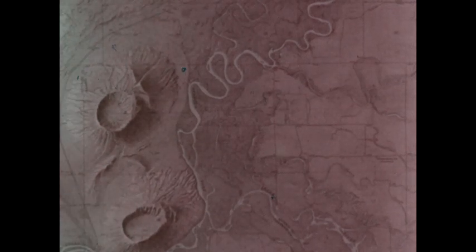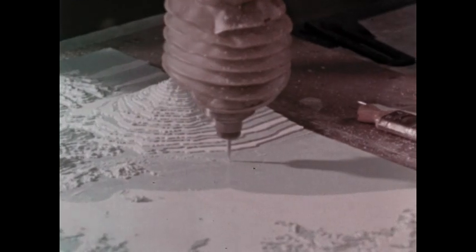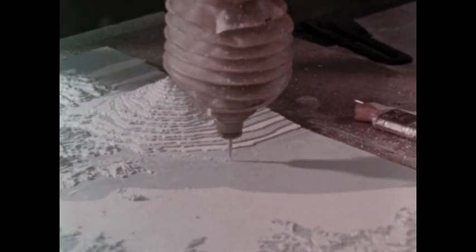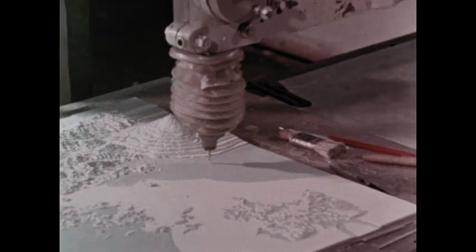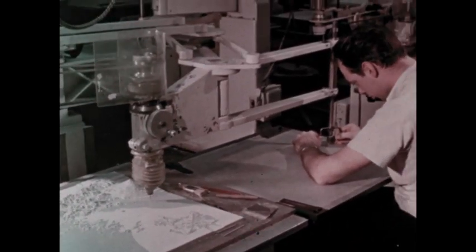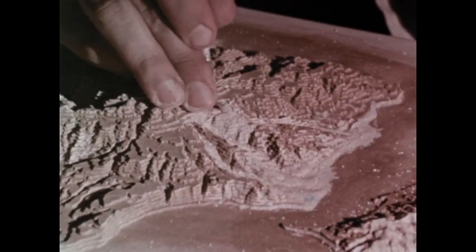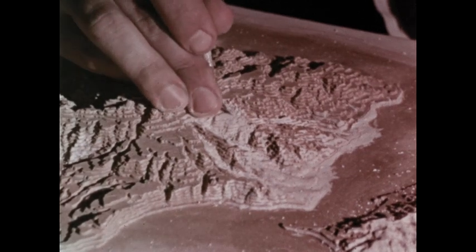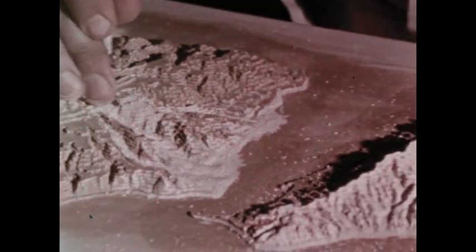Carrying this idea even further, some maps may be prepared in actual three-dimensional relief. To do this, a model is first made by routing out, layer by layer, exact duplicates of the contour lines. Using the contour levels as the basic relief, a realistic model of the earth's surface is prepared.